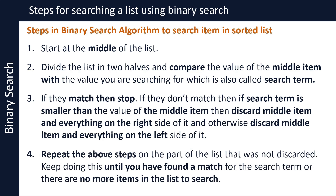Now you are left with the list of items on the left or right side of the middle item. Repeat the above steps on the part of the list that was not discarded — that is, starting at the middle of this list and comparing the value of the middle item with the search term, and discarding items on the left or right side of the middle item. Keep doing this until you have found a match for the search term, or there are no more items in the list to search.